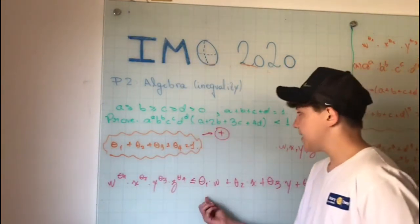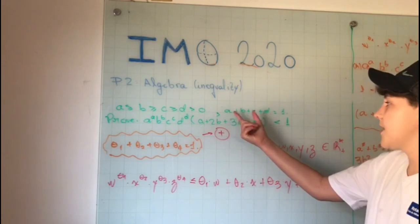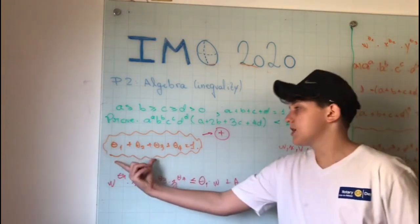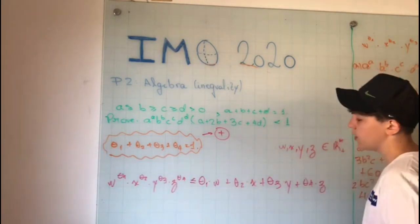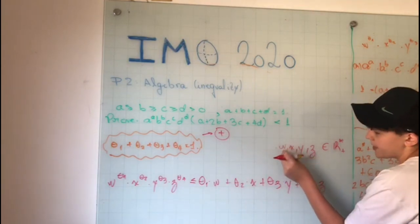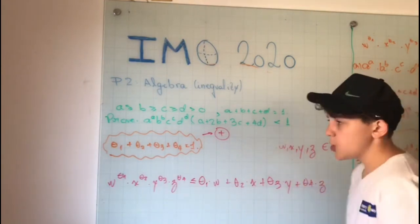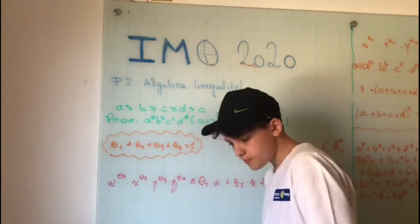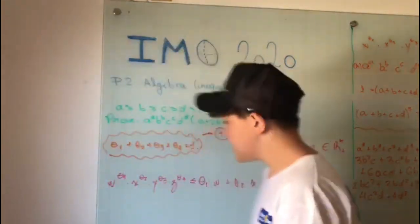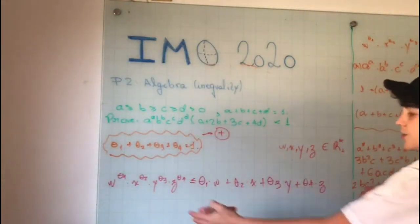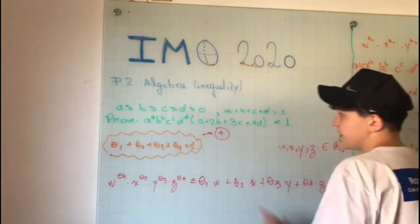Then using this inequality, we will apply it to the case where a, b, c, and d are θ₁, θ₂, θ₃, θ₄, and a, b, c, and d are also w, x, y, and z. So let's go to the following inequality.